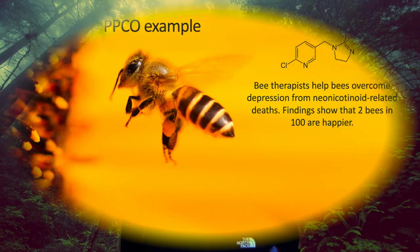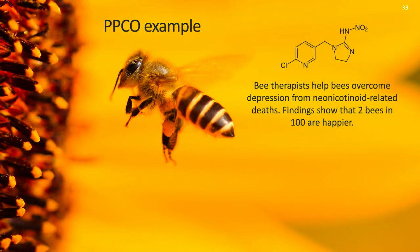Okay, so let's take a look. This is an example of some research findings. They are completely hypothetical, but in these hypothetical research findings there's a study that looked at what bee therapists could do. Bee therapists were helping bees overcome depression from neonicotinoid-related deaths. Neonicotinoids are a class of chemicals used as pesticides on agricultural fields, but they can have some unwanted effects on pollinators. These bee therapists apparently did something and had an effect — findings were showing that two bees in a hundred were happier. So we're listening to these researchers and we want to give them some feedback about their work.